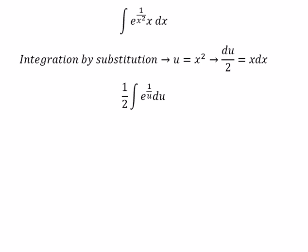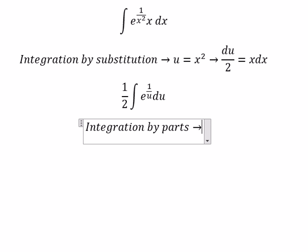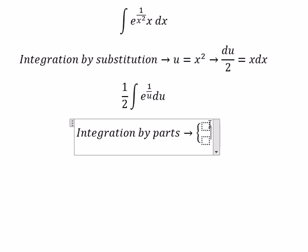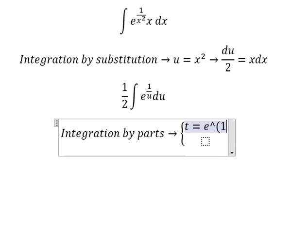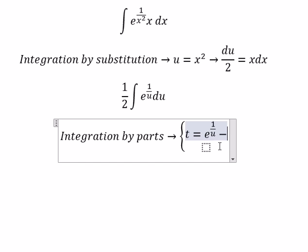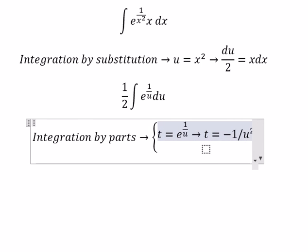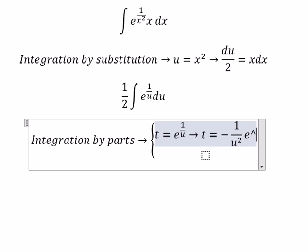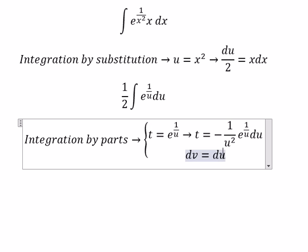Next we need to use integration by parts, so we have t and dv. t equals e to the power of 1 over u, so dt equals negative 1 over u squared times e to the power of 1 over u. For dv we have du, so v equals u.